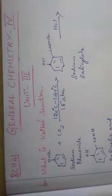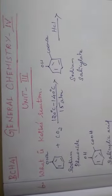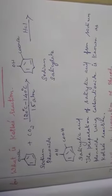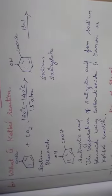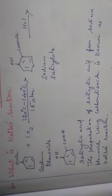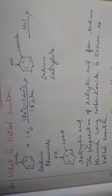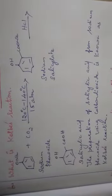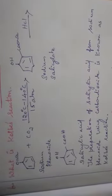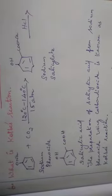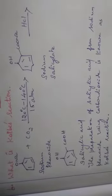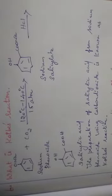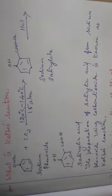What is Kolb's reaction? The preparation of salicylic acid from sodium phenoxide using carbon dioxide is known as Kolb's reaction. You are taking sodium phenoxide and carbon dioxide and heating at a temperature of 120 degree Celsius to 140 degree Celsius at 15 atmosphere. The intermediate product got is sodium salicylic and the final product is salicylic acid. This is called Kolb's reaction.